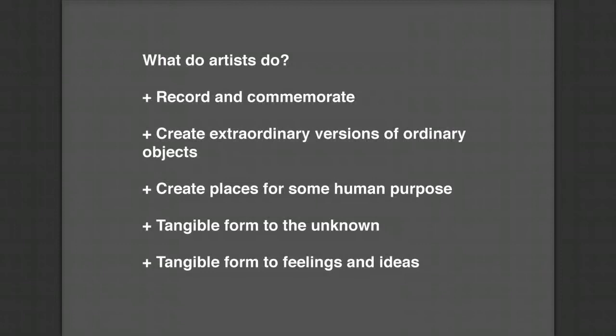Cave paintings and the Venus of Willendorf provide examples of two of the five tasks that define what artists do. The caves record and commemorate an event. The Venus of Willendorf creates an extraordinary version of ordinary objects — extraordinary examples of female fertility. We're going to look at examples of the other three areas considered qualifications of what artists do: create places for human purpose, create tangible forms for the unknown, and create tangible form to feeling and ideas. These are better illustrated through more modern examples in art history.